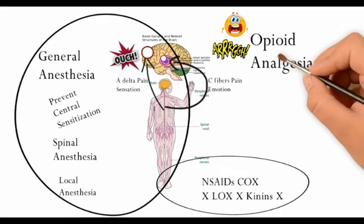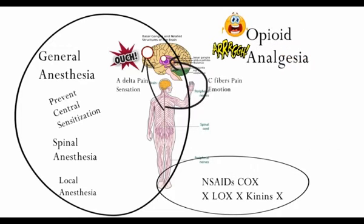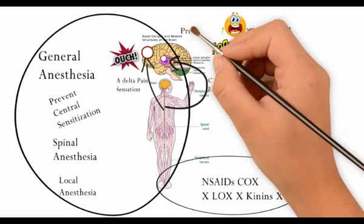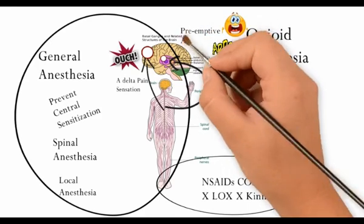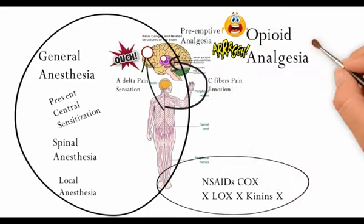Opioids act on the basal ganglia and they block chronic pain and pain as an emotion. Opioids started before tissue damage, also known as pre-emptive analgesia, require a reduced dosage as opposed to higher doses needed if started after the injury.